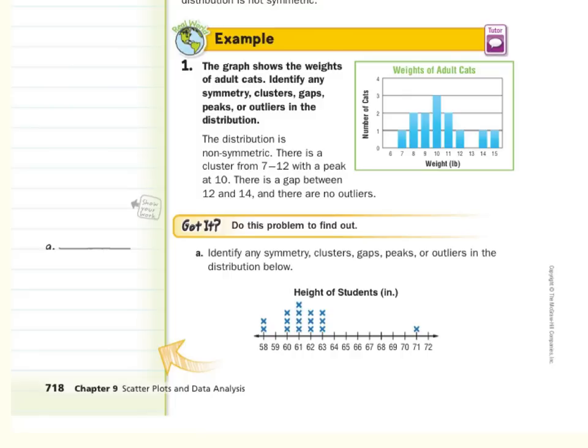So our got it question, identify any symmetry, clusters, gaps, peaks, or outliers in the distribution below. Well, let's work here with symmetry first. The left side is not the same as the right side, plus we have this outlier over here, so we're going to describe the symmetry as being non-symmetric. Next, any clusters. There appears to be a cluster here from 60 to 63. So we're going to say for clusters, 60 to 63.